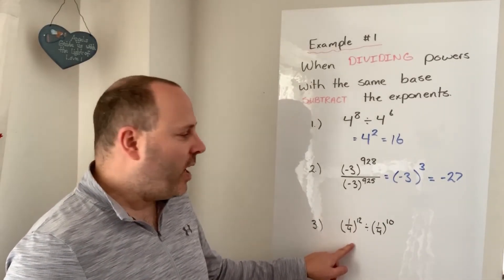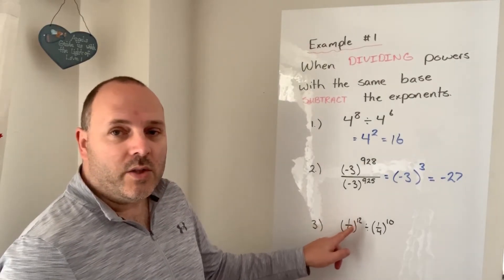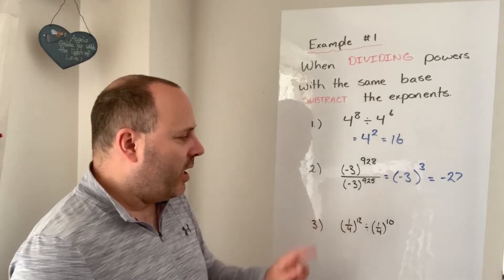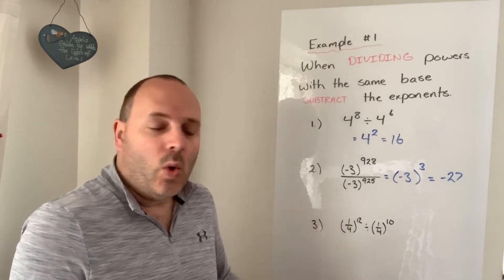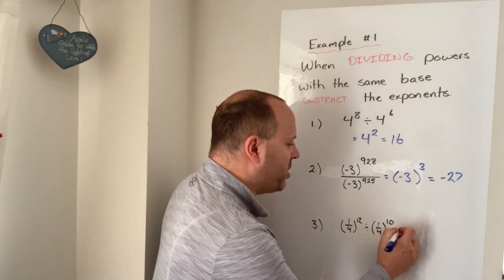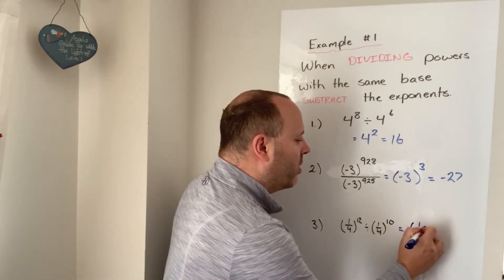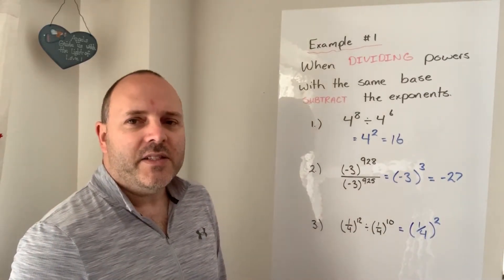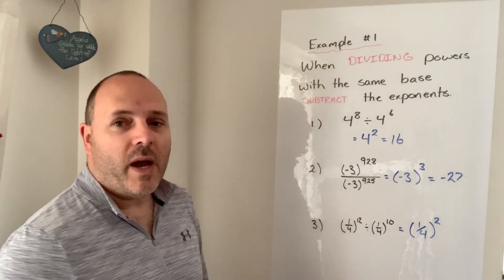Okay, last example, using the fractions. 1 quarter to the power of 12 divided by 1 quarter to the power of 10. Again, same base, 1 quarter. So subtract the exponents. So this is 1 quarter. 12 minus 10 is 2. So it's 1 quarter to the power of 2.